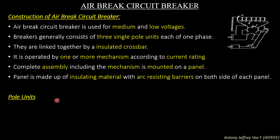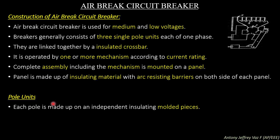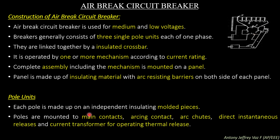Each pole is made up of independent insulating molded pieces. The pole units represent the contact parts and these two contact parts of an air break circuit breaker are connected with insulated material of very high dielectric strength. The poles are mounted with main contacts, arcing contacts, arc chutes, direct instantaneous release, and a current transformer for operating thermal release.